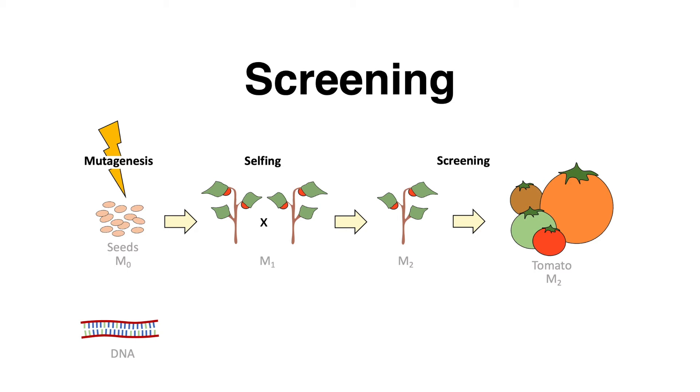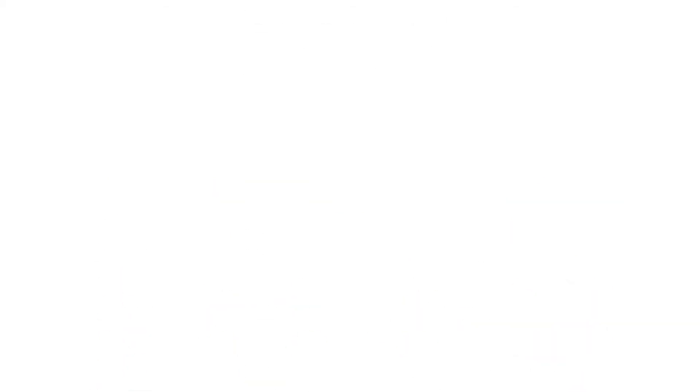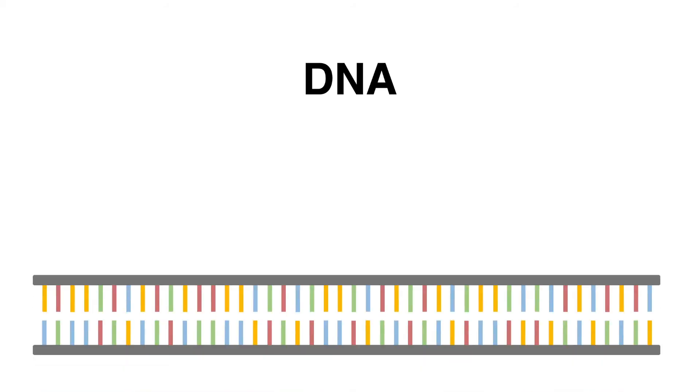Maybe a certain color, shape, or volume of the fruit is desired. Genes are encoded in the DNA.